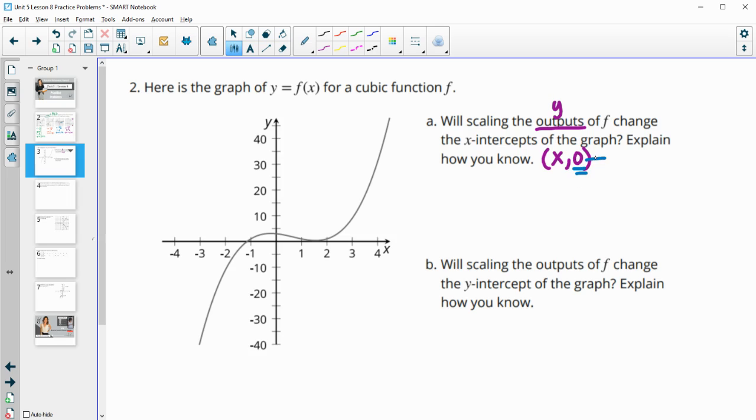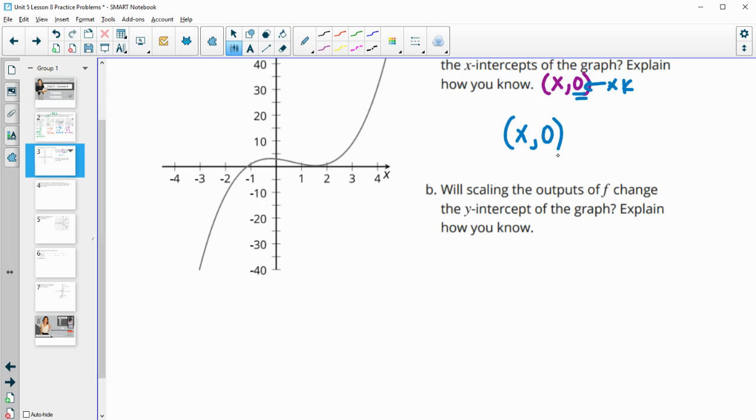So no matter what we multiply this by, if I take and multiply this by k I'm going to get back x because I didn't do anything to that, and then 0 times anything is 0. So I'm going to get back the exact same point. Multiplying 0 by anything doesn't change it.